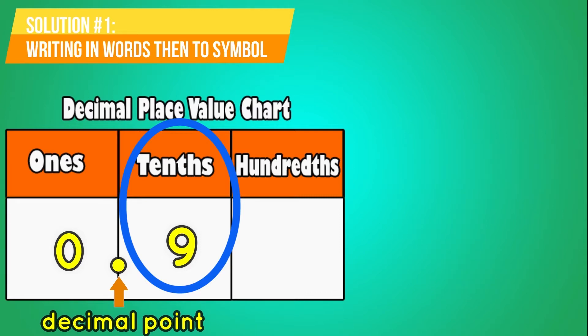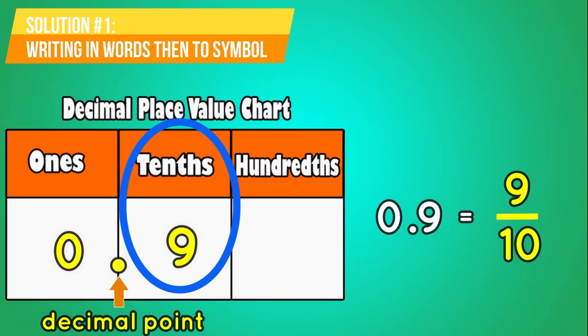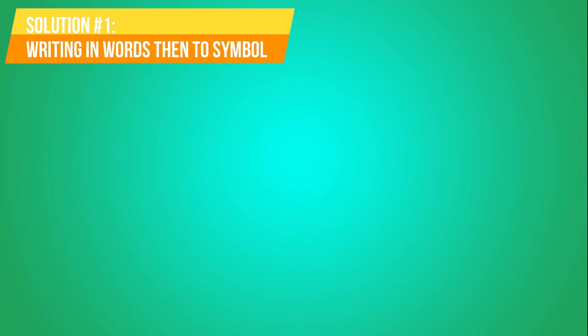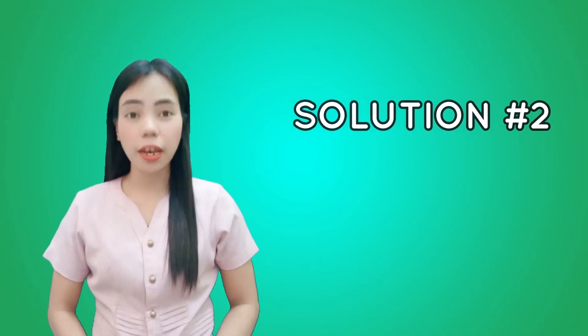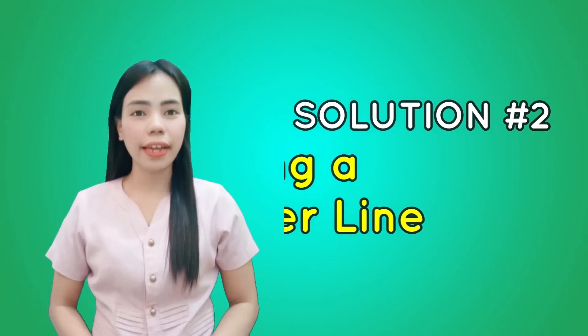Thus, 9 tenths in decimal form is equal to 9 tenths in fraction form. The second solution is by using a number line.